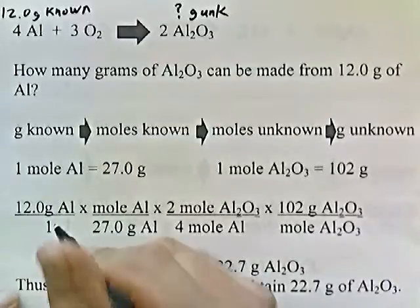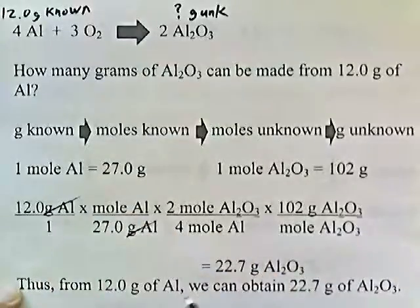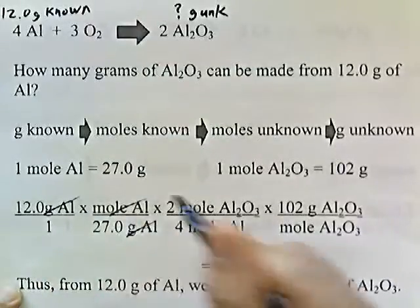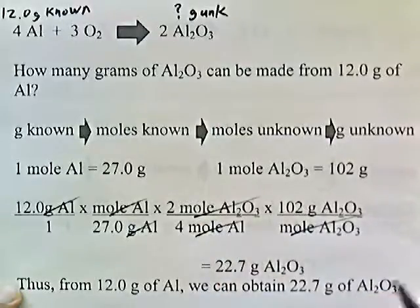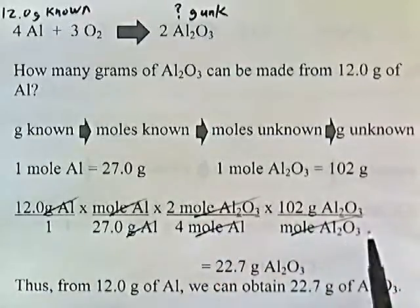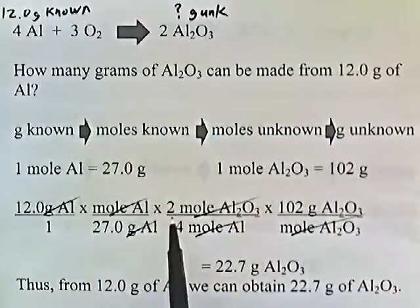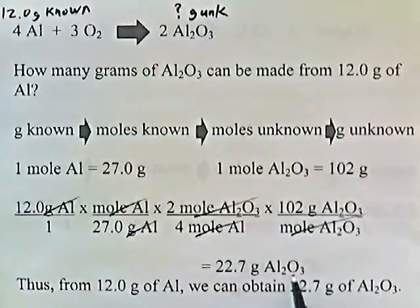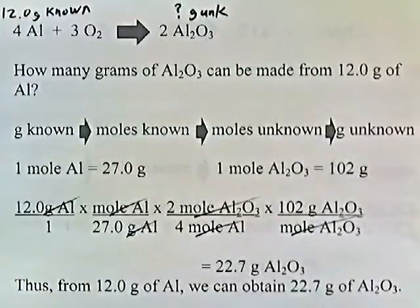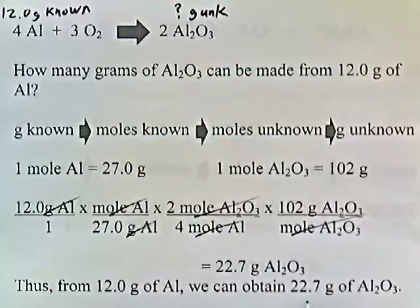Grams of aluminum cancel, moles of aluminum cancel, moles of aluminum oxide cancel, and we're left with grams of aluminum oxide. 12 times 2 times 102 divided by the product of the bottom numbers gives 22.7 grams of aluminum oxide. So from 12 grams of aluminum you can produce 22.7 grams of aluminum oxide.